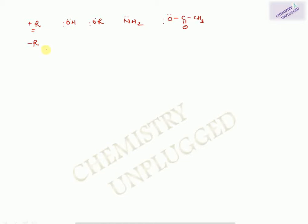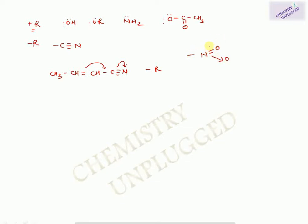Minus R effect means when a group is pulling electrons from the system. For example, –CN connected to a system — nitrogen has higher electronegativity so it pulls electrons toward it — that is minus R effect. Similarly, the nitro group (–NO₂) pulls electrons from the system, so it is also minus R effect. Certain groups like –NO, alkenes, and the phenyl ring can show both plus R and minus R effect.